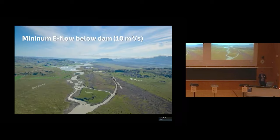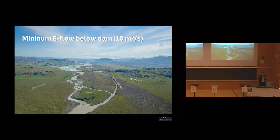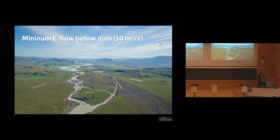Here you can see a picture of the Hvammur project. We have a minimum e-flow below the dam of 10 cubic meters per second. That's the lowest it will get.